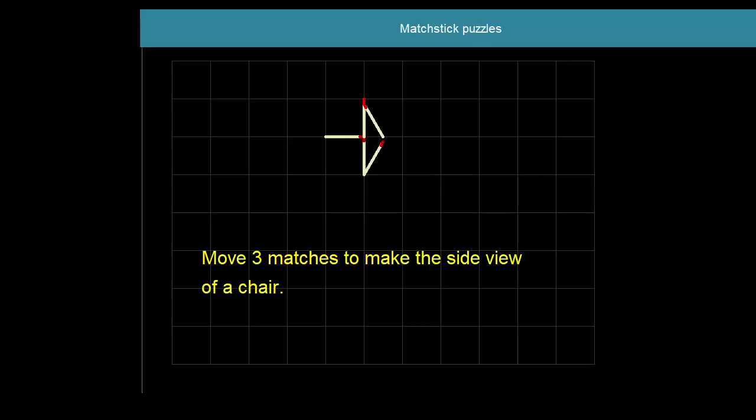An arrow pointing to the right. Which three matches would you move so that the shape you end up with looks like a side on view of a chair? Side on view of a chair by moving three matches.